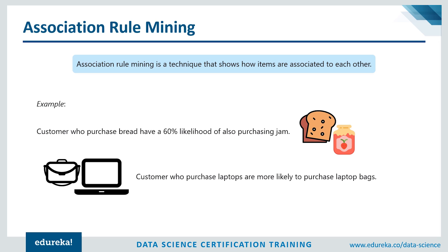This happens to all of us — when we go to the grocery store to buy a list of items, we end up buying many things we didn't plan on. Even though you didn't intend to buy all those products, you did because the products were arranged smartly in the store. This is a simple insight, but if you go to a professional data scientist with all your transactional data, imagine the insights you'll get. Association rule mining is therefore a very useful model for finding product associations, placement, and improving sales.